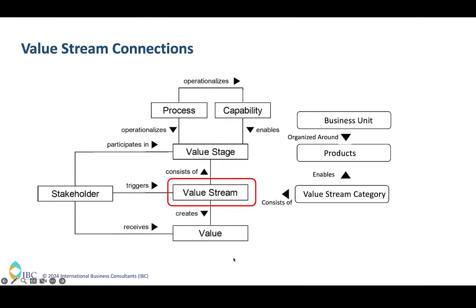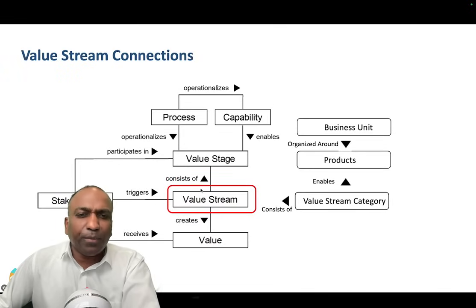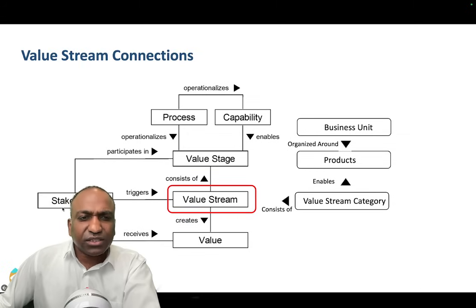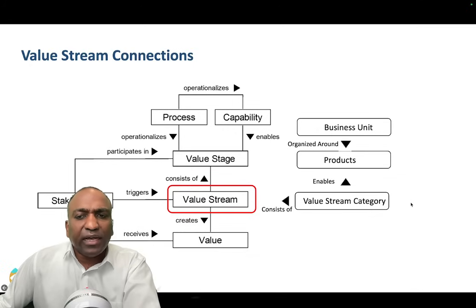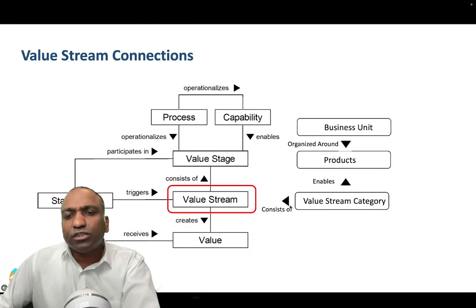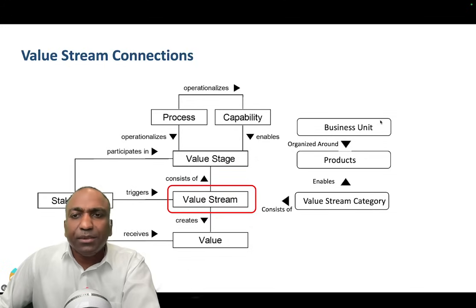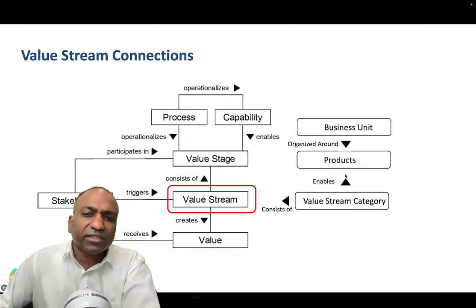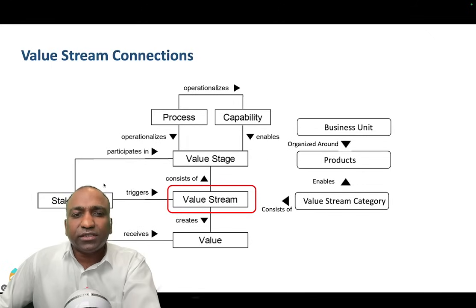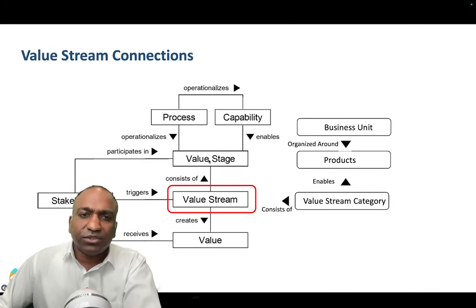Looking at this picture, it summarizes the relationship between all the key things discussed today. Everything is triggered by a stakeholder — an end customer or internal customer — and it ends with the stakeholder getting value. A value stream category may group multiple value streams working together to support it. A business unit is organized around products, and the products enable the value stream category, which in turn delivers those products to customers. A value stream also consists of value stream stages, and stakeholders may participate in a value stage.